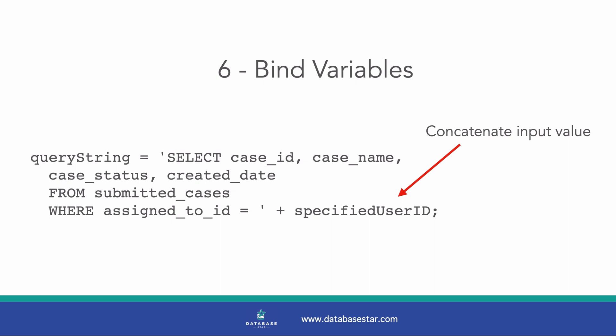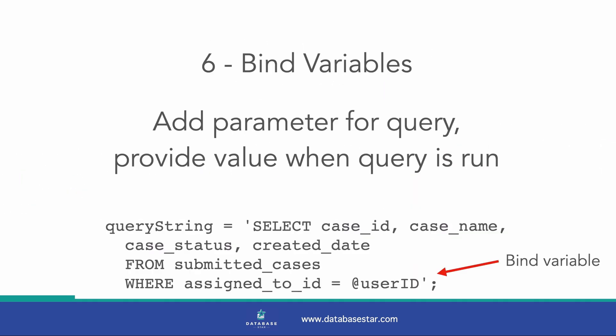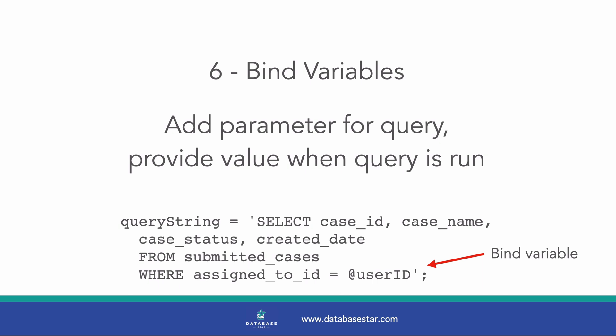Feature number 6 is called bind variables. Let's say you have an application that runs an SQL query with a parameter that you provide from the application to the query, so the query can return data based on a certain value, such as a user, a customer, or some other input. Here's an example — it filters data on the assigned to ID column, but the ID value changes based on which user is in the application. One way to do this is using string concatenation, but this is a poor way of doing it as it leaves you open to a risk of something called SQL injection. The solution is to use a bind variable — an SQL feature that lets you turn part of a query into a parameter. You then provide the value for that parameter when you run the query, without concatenating values in a query string or writing separate queries.